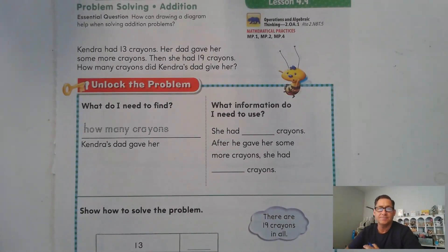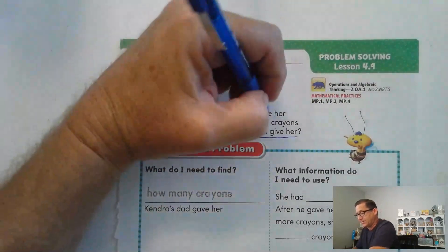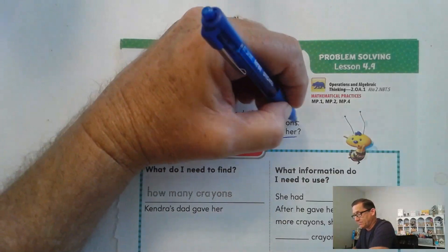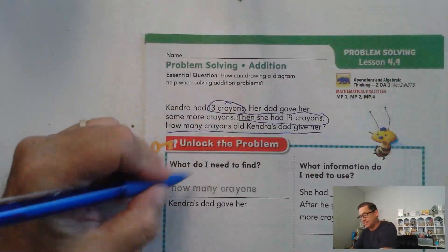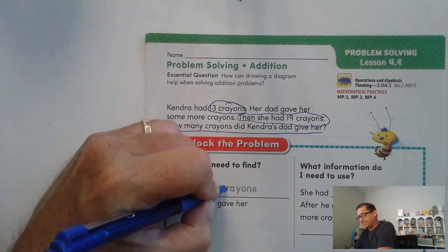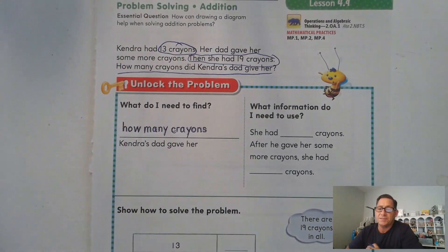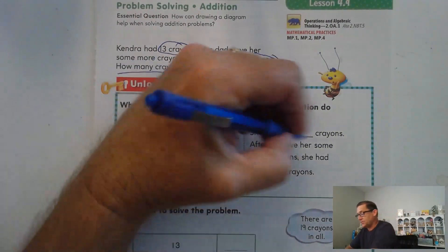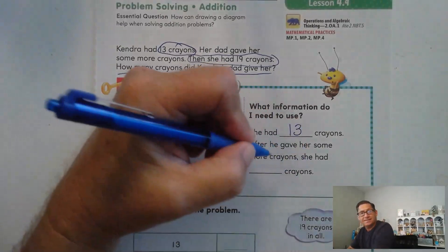Let's look at this question. Kendra had 13 crayons. Her dad gave her some more crayons. Then she had 19 crayons. How many crayons did Kendra's dad give her? We know that Kendra had 13 crayons and her dad gave her some more, so then she had 19. What do I need to find? How many crayons her father gave her? What information do I need to use? We need to know that she started with 13 crayons and then after her father gave her some more crayons she had 19.